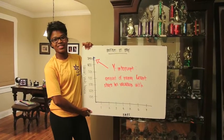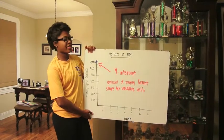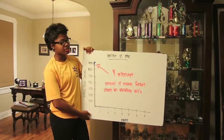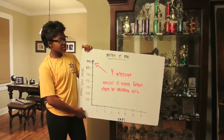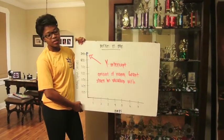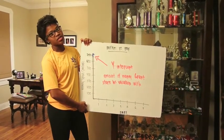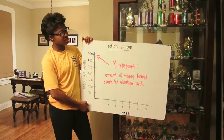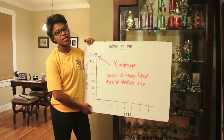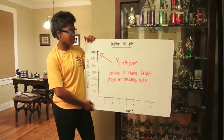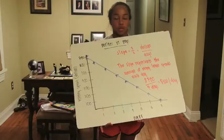Here's a graph of the amount of money Grant spends while on vacation. The Y-intercept of the graph will be the amount of money Grant starts his vacation with. Since his mom gave him $700, his Y-intercept is $700.